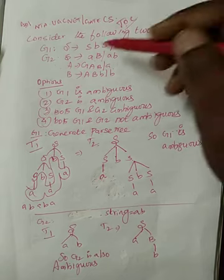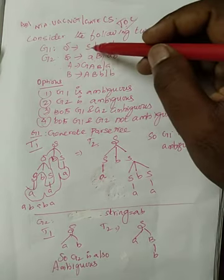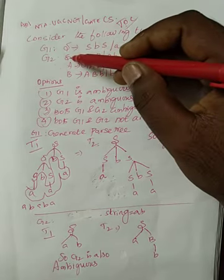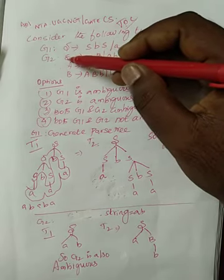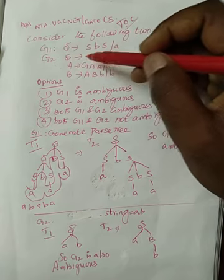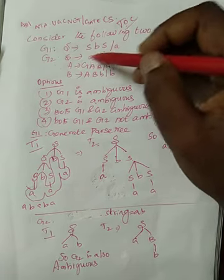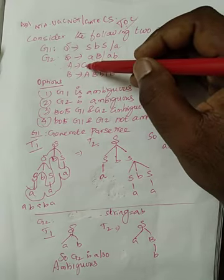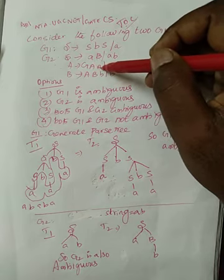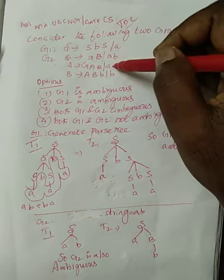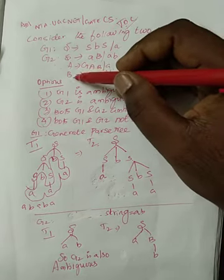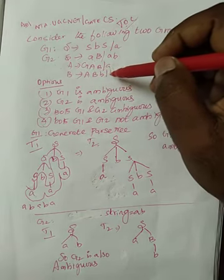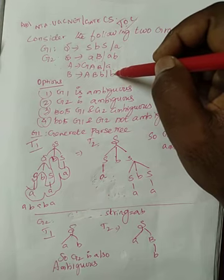Consider the following two grammars. G1: S tends to S, small b, S, or S tends to A. Another grammar, G2, in which S tends to small a, capital B, or small a, B. And A tends to capital G, A, B, or A tends to A. And B tends to A, B, small b, or B tends to small b itself.